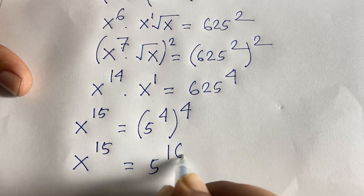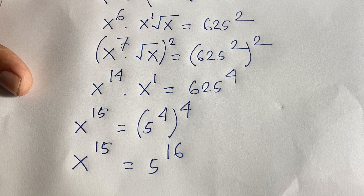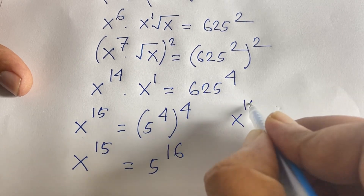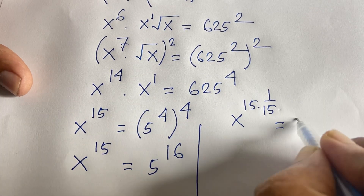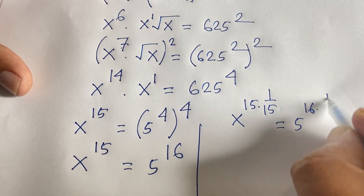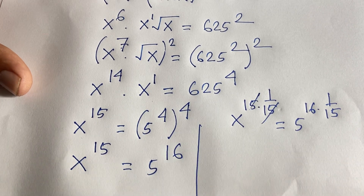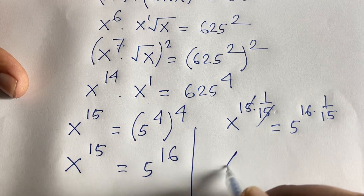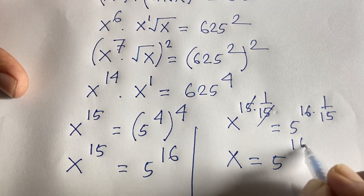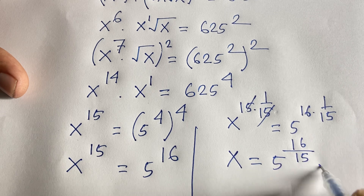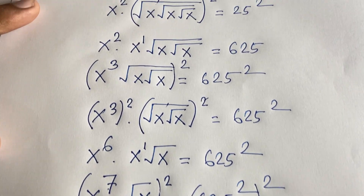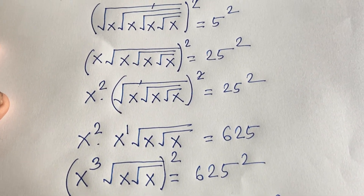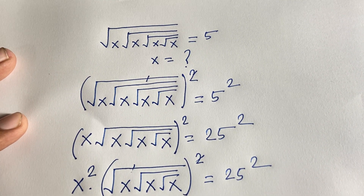We need the value of x in this exponential equation. I raise both sides to the power of 1/15. On the left, 15 and 1/15 cancel, giving us x equals 5 to the power of 16/15. This is our final answer. Thank you all — if you enjoyed this video, please subscribe to my channel for more interesting videos. Goodbye, take care.